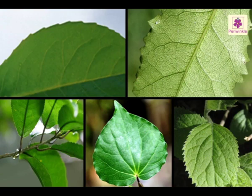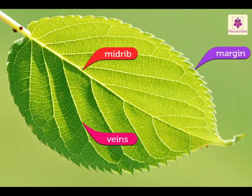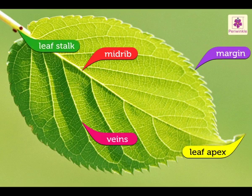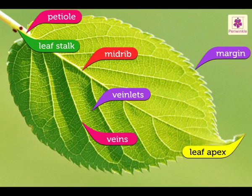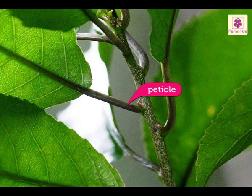they have some common features like midrib, margin, veins, leaf apex, leaf stalk, veinlets and petiole. The petiole is a short length of stem that joins the leaf to the main stem.